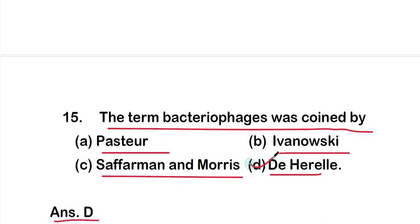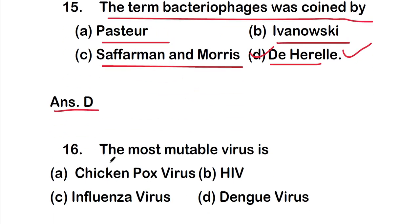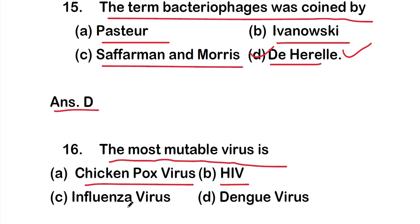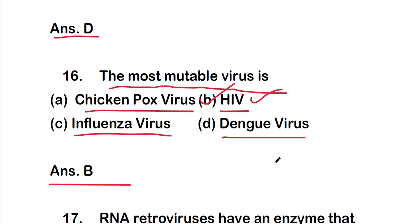Question 16: the most mutable virus is — option A: chickenpox virus, option B: HIV, option C: influenza virus, or option D: dengue virus. The right answer is option B, HIV. The most mutable virus is HIV.